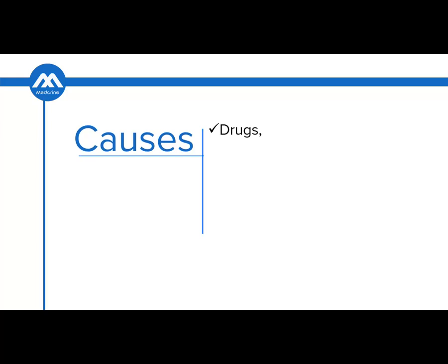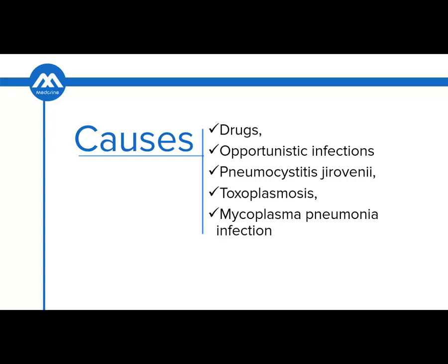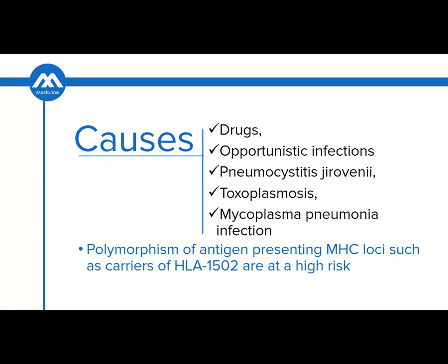The most common cause is drugs, and some opportunistic infections such as Pneumocystis jirovecii, toxoplasmosis, and Mycoplasma infections, mostly in children. All these three infections are opportunistic infections in immunocompromised patients. Polymorphism of antigen-presenting major histocompatibility complex loci, such as carriers of the human leukocyte antigen B*15:02, are at a higher risk when compared to other people.